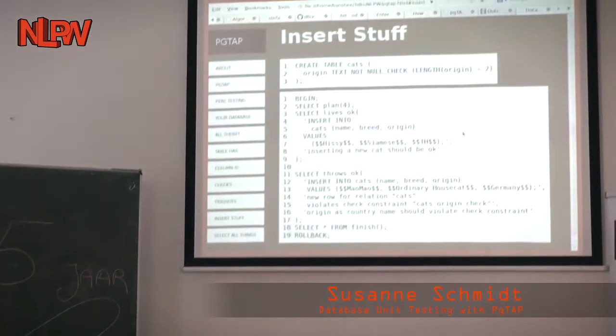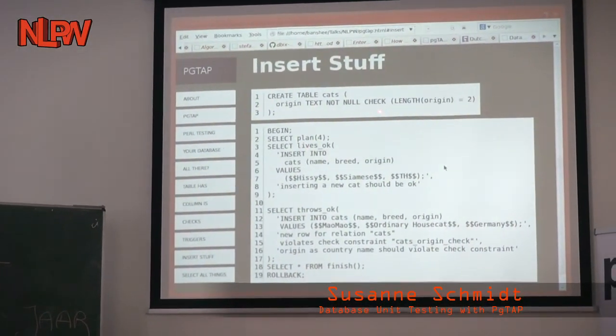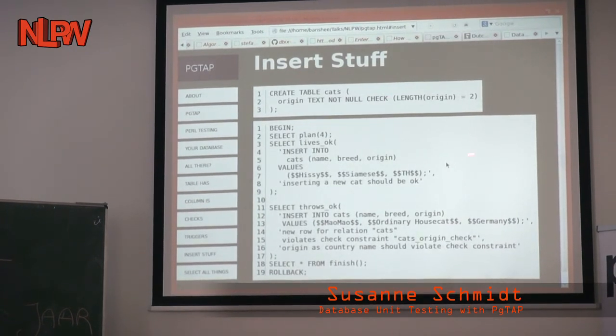So, in the end, you go, of course, to actually handling data. So, if you have your table and your table has, for example, here, this little check constraint, you're expecting two things to test. You're expecting a valid insert, which isn't supposed to fail. But, of course, you also want to test if your check actually rejects data. So, you usually start to test these things in pairs. One valid thing, which you expect to succeed, which is lives_ok. Inserting a new cat should simply be okay. And then you test the opposite, a throws_ok. You're inserting something invalid, deliberately, and expect the specific return, what you're violating.